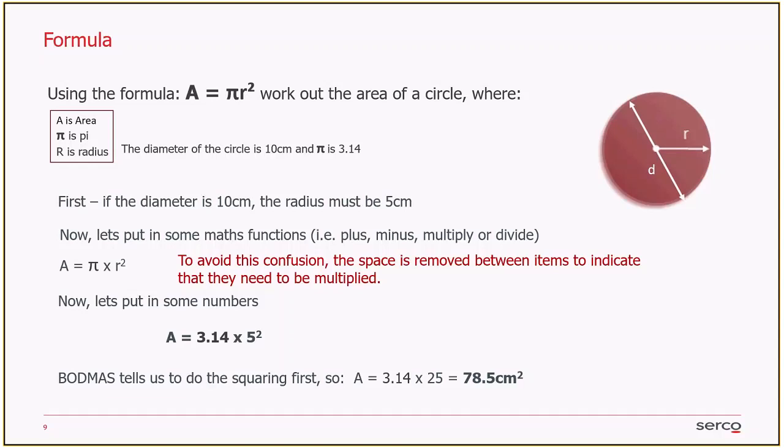So once again, it can seem quite daunting when you see that formula if you haven't seen it before. But the questions in Functional Skills will always give you the figures. It will tell you what the circle is. It will actually tell you usually what pi is, and they will tell you what the formula is. So the key is to put in the numbers in the formula, and then recognizing what do I do with those functions. If there's a number next to a letter or two symbols next to each other, they're always multiplied.